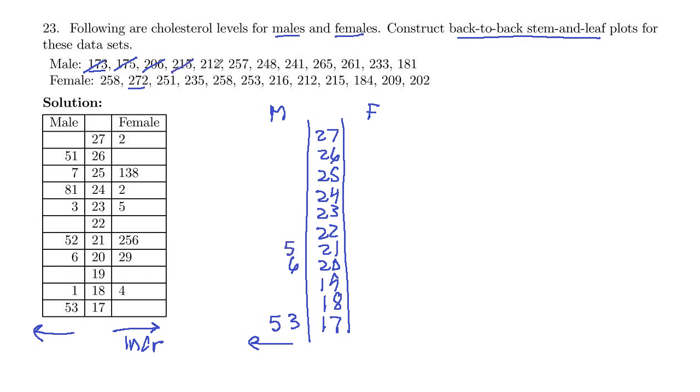And then we've got 212 also. So that's also in the 21 stem. But then the leaf is 2, which is less than 5. So that 2 needs to be closer to the middle. Smaller numbers are closer to the middle. So a 2 there, and then a 5 there.